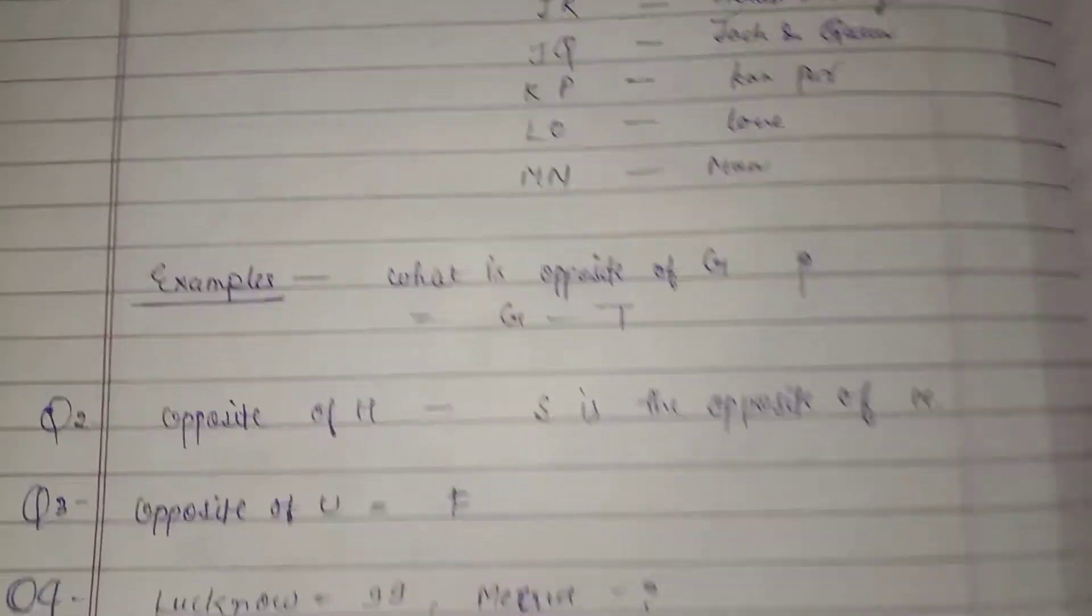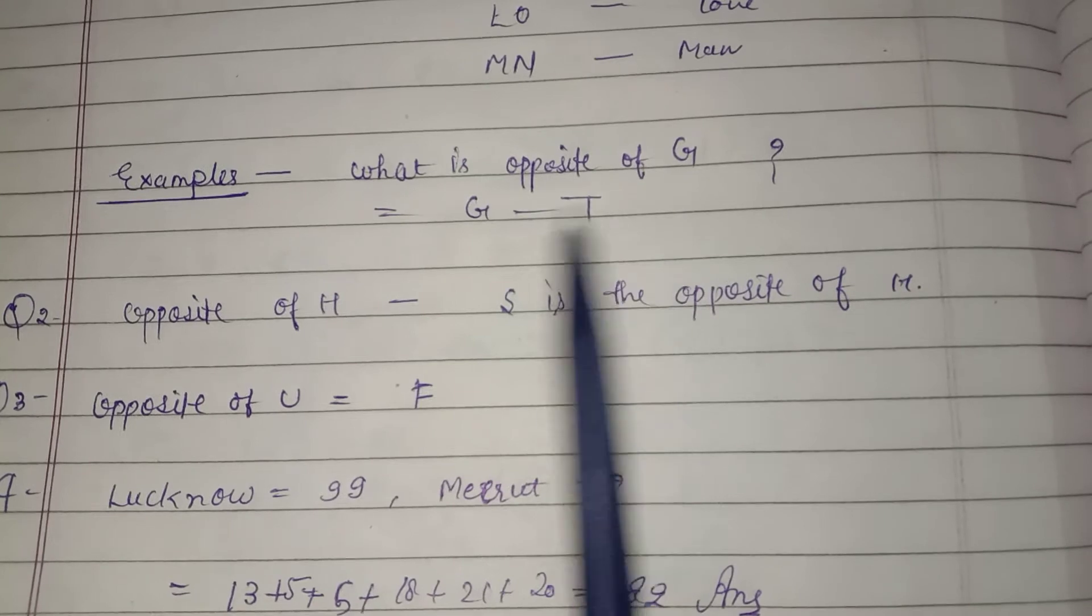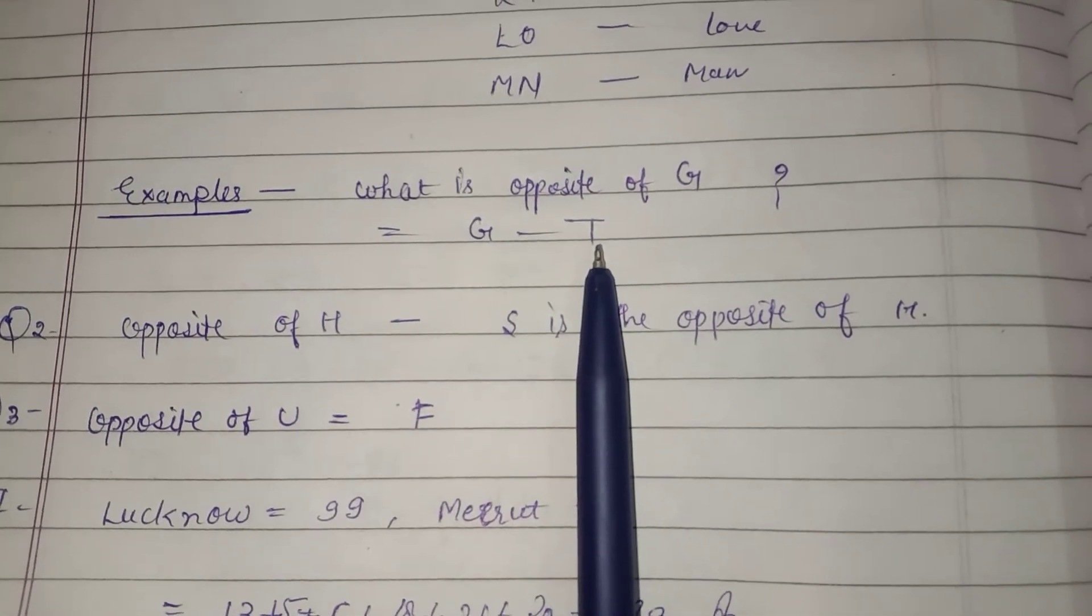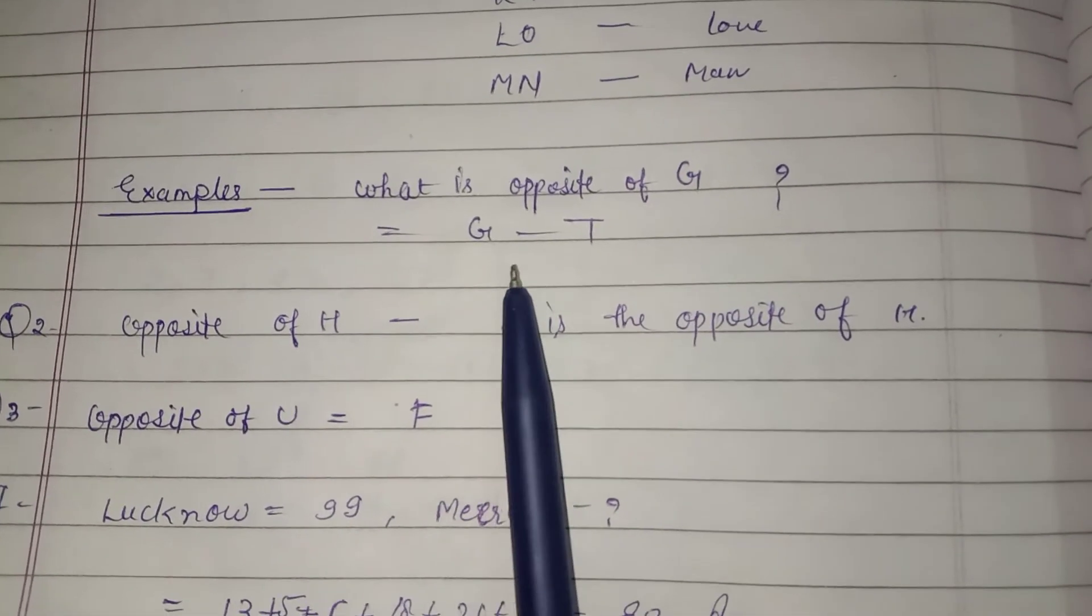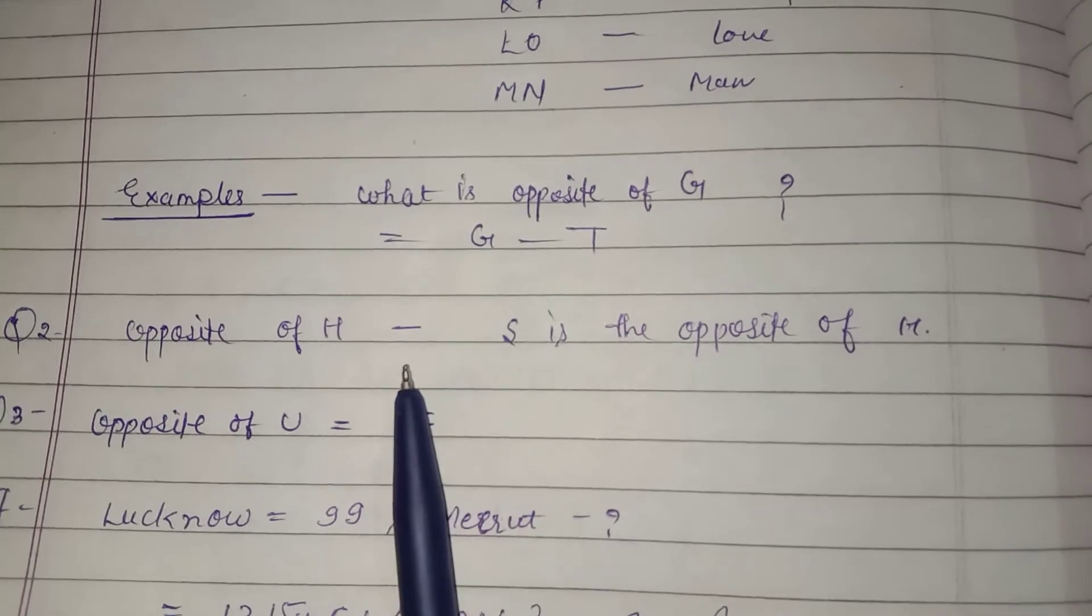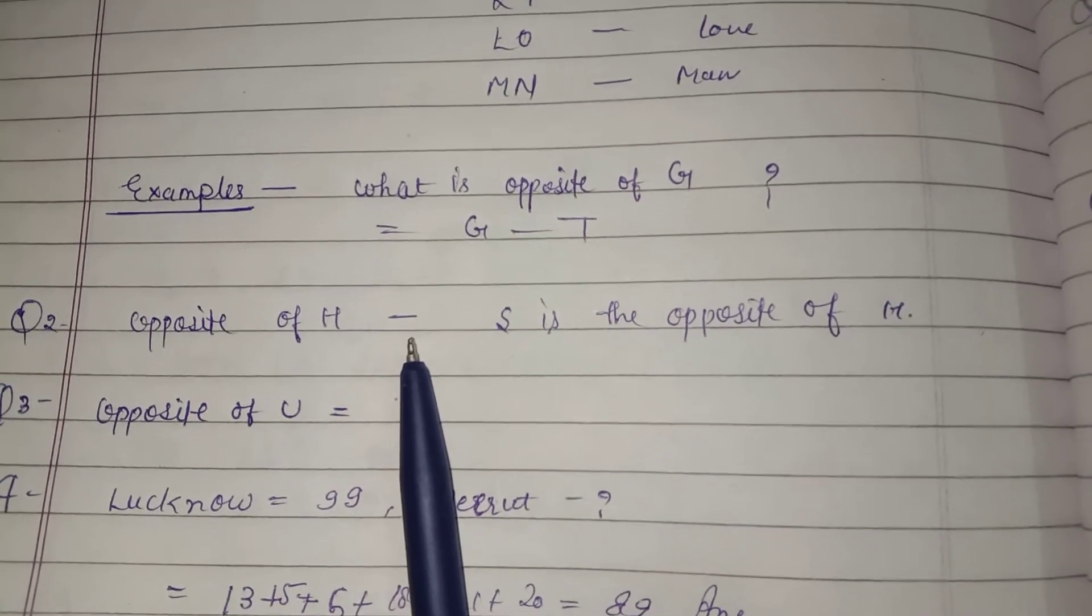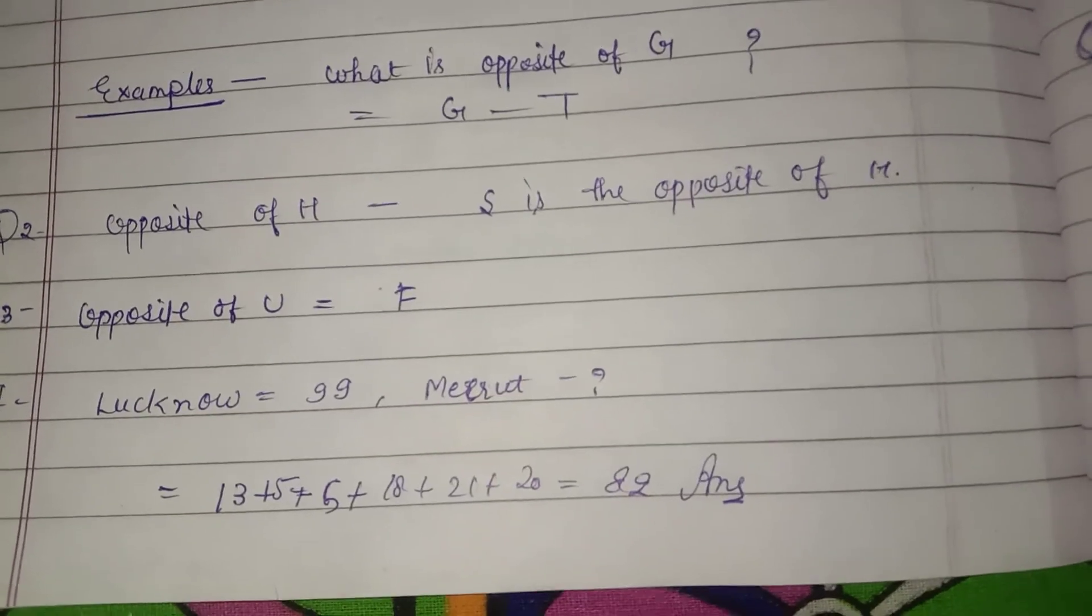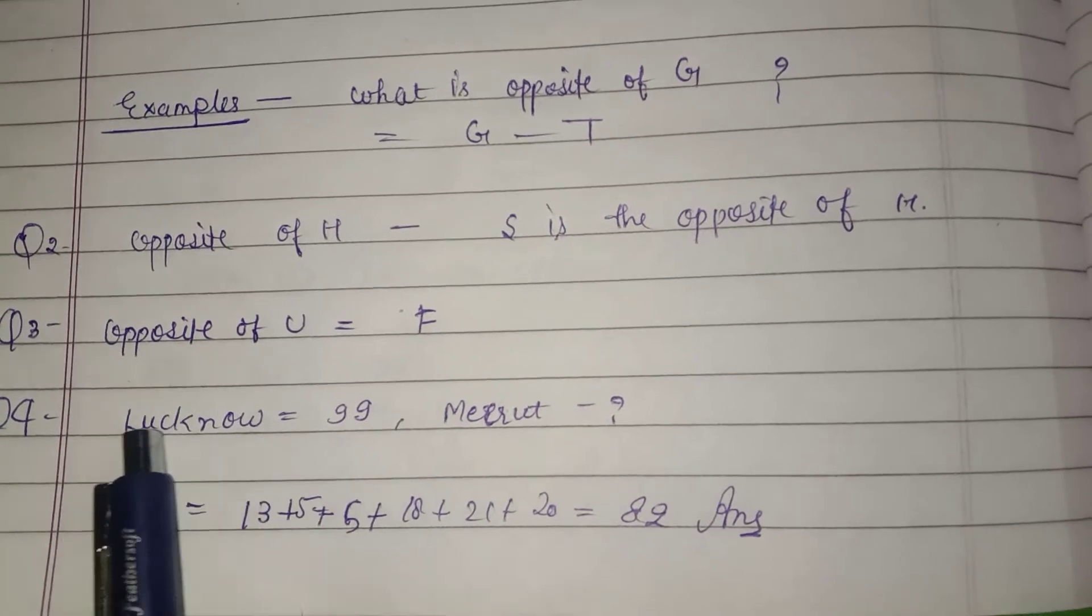Let's go to question examples. What is the opposite of G? I will explain to you. What should we do to find G's opposite? G's opposite is T. How should we find opposite of H? We have learned Honey Singh, so H is honey, S is Singh. So H's opposite is S. We have seen U's opposite in the same way.